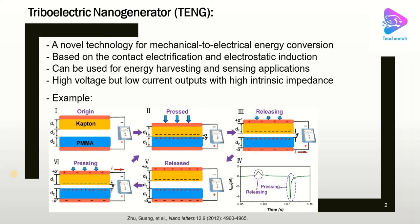Let's see how TNG works. This is an example of a TNG based on contact and separation of two materials. We have two dissimilar materials brought into contact because of triboelectricity, and charges are generated on the surfaces. One surface gets negative charges and the other gets positive charges depending on the polarity of the materials. As they get separated, due to the change of electric field, an imbalance occurs on the backing electrodes which causes charge flow — this means electricity generation.